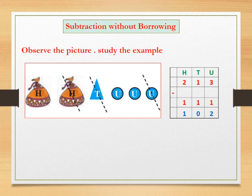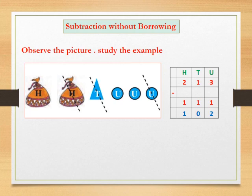In the units place: 3 units minus 1 unit, answer 2 units. Then in the tens place: 1 ten minus 1 ten, 0 tens. Then in the hundreds place: 2 hundreds minus 1 hundred, 1 hundred. So our answer is 100, 0 tens and 2 units, which is 102.